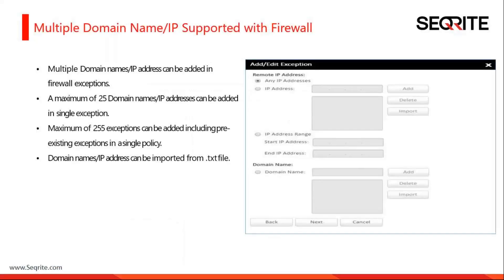Let's move to the next change — multiple domain names and IPs supported with the firewall. Firewalls are a very important setting of endpoint security. In the firewall we need to create multiple rules, and those rules may have IP addresses or domain names specified.